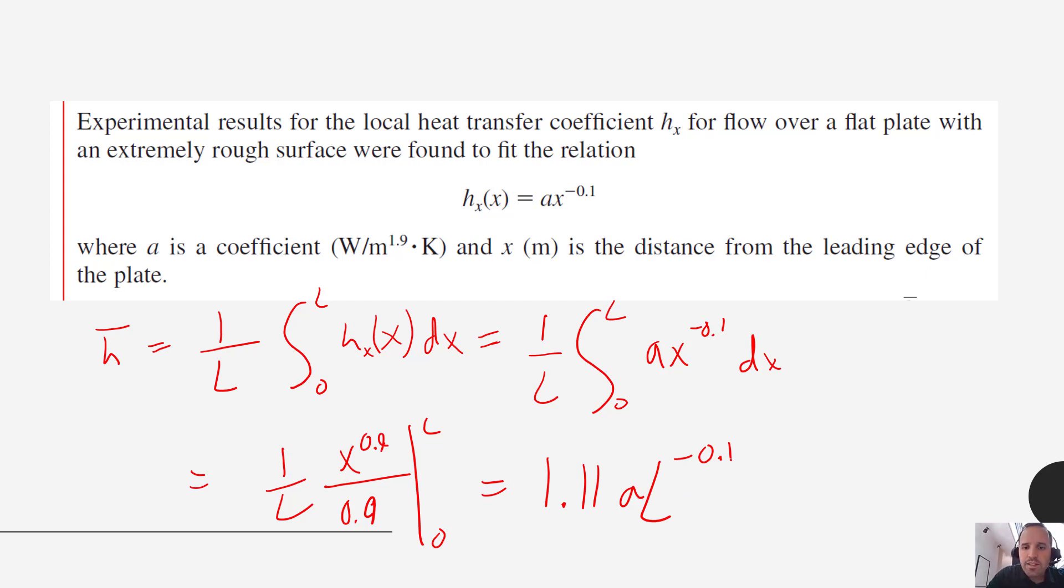So this is a constant, a is a constant and L is a constant, so this is going to give us h bar rather than an h that changed with respect to x. This is going to give us an average.